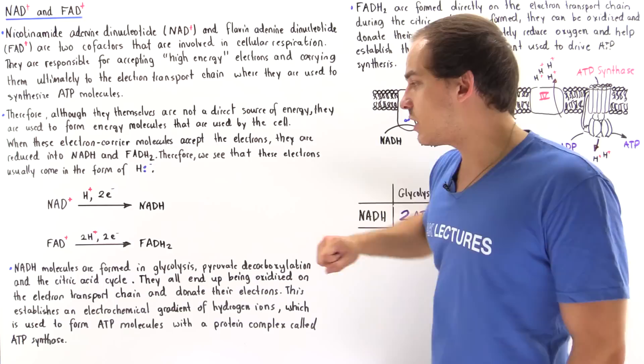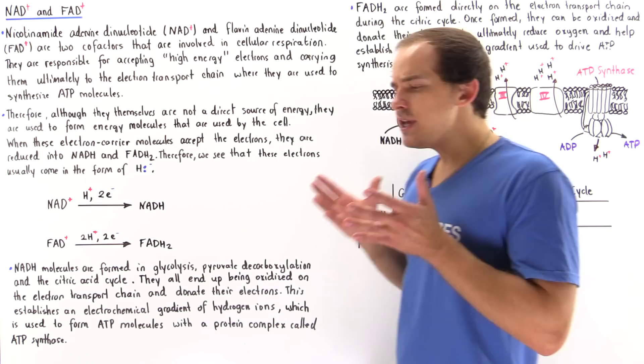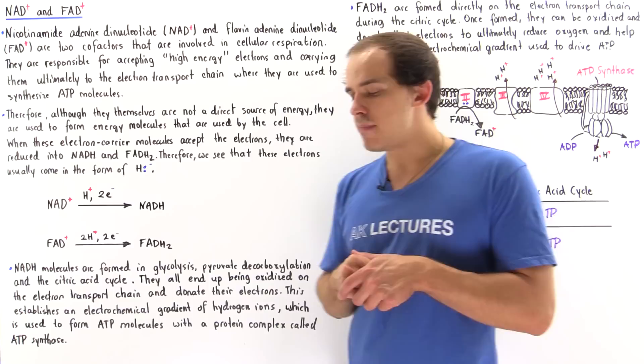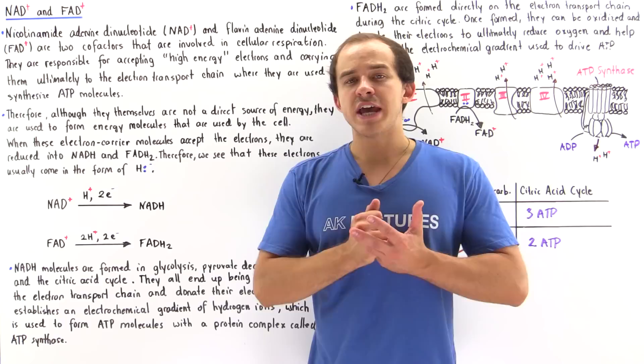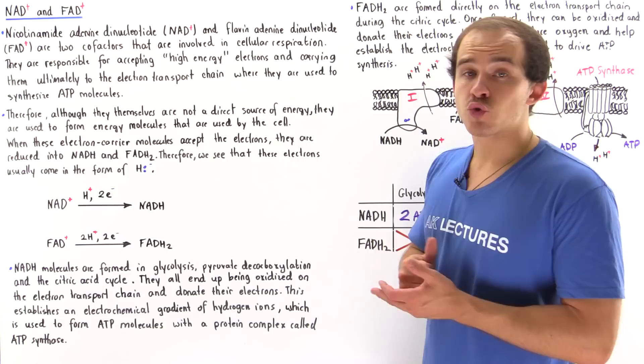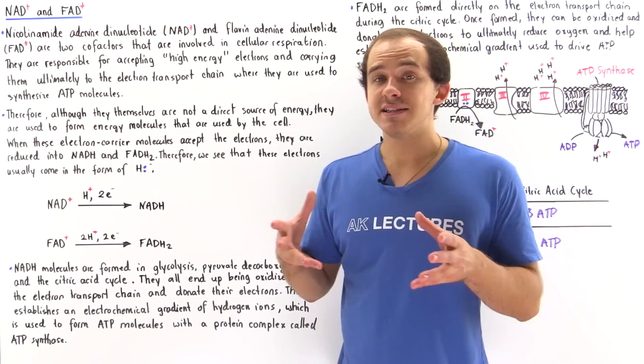NADH molecules are formed in glycolysis, which takes place in the cytoplasm of the cell. NADH is also formed in pyruvate decarboxylation and in the citric acid cycle, also known as the Krebs cycle, which takes place in the mitochondrial matrix. Once formed, NADH molecules travel to the electron transport chain.